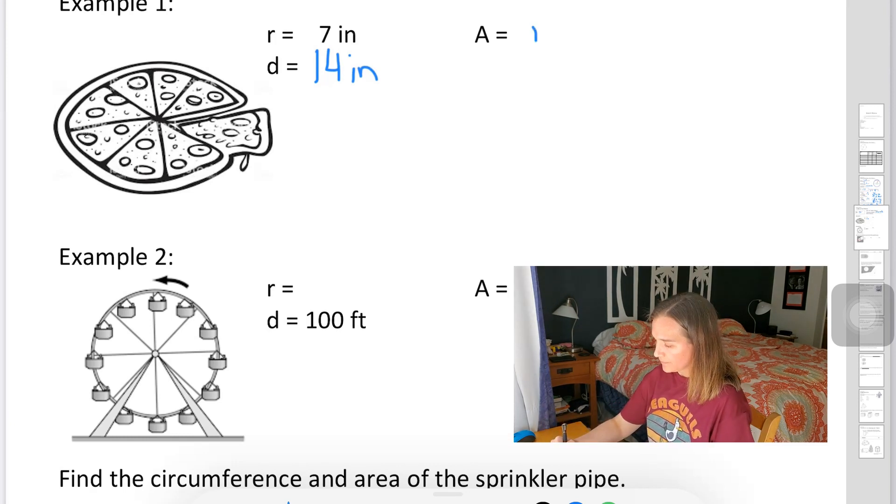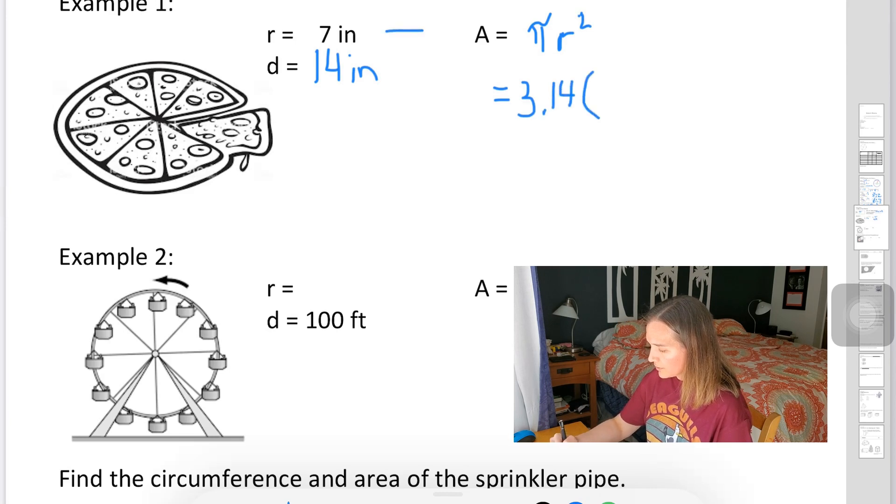And so for my area, it's going to be pi times radius squared. These are tough to write on here. In this case, 3.14. And my radius right here, 7 squared.